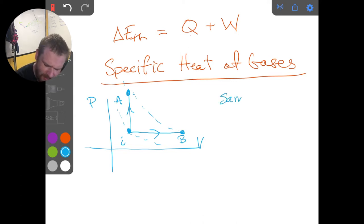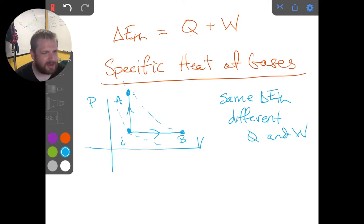And so we have the same delta E thermal for both processes, but we're going to have different Q's and W, because clearly we have no work in case A, because the volume doesn't change, the area under that curve is zero, and we have some finite work along path B.